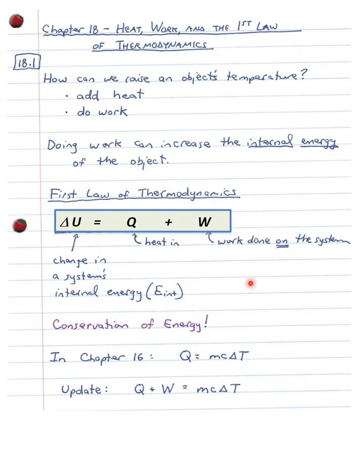If you're looking at other textbooks or sources online, you may come across this equation written as ΔU = Q − W. The difference is just how you define W. If you see the first law written as minus W, that means they're defining W as the work done by the system. I think that can be confusing. I prefer the way our book does it: ΔU = Q + W. This is basically a statement of conservation of energy — whatever heat you add plus whatever mechanical work you do becomes an increase in the internal energy of the system.